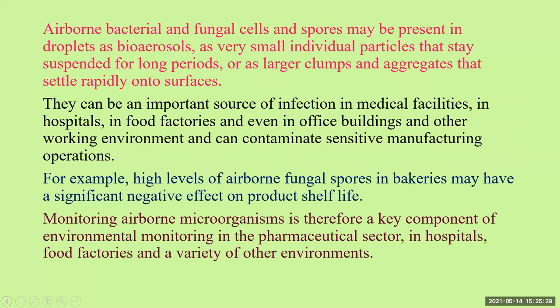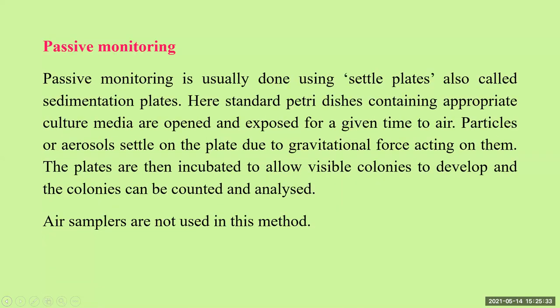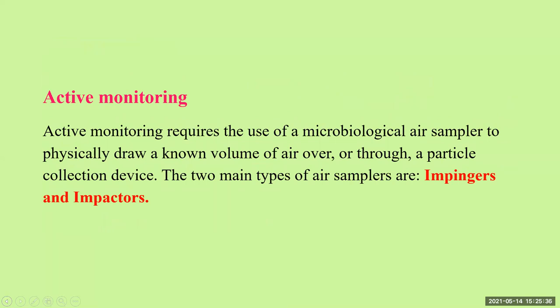Active monitoring requires the use of a microbiological air sampler. The air sampler physically draws a known volume of air over the surface of a medium, inside the medium, or through a particle collection device. Mainly, active monitoring is done by two types of samplers: impingers and impactors. One method is impingement in liquid, and another is impaction on solid medium.